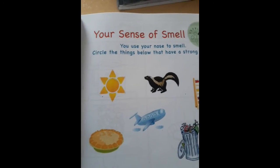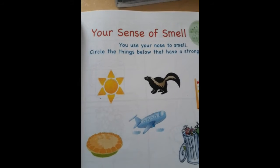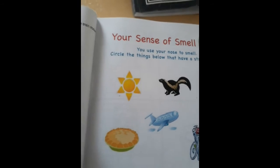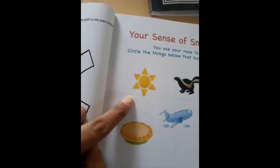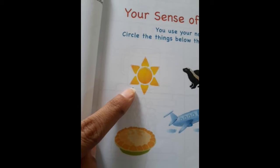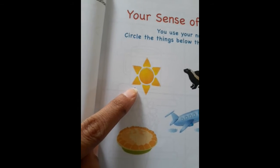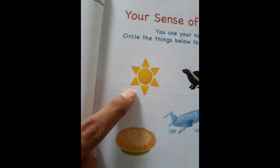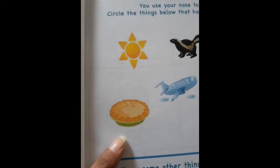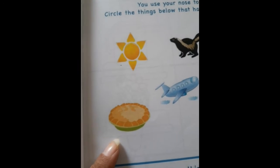Now you need to color the pictures of things you can smell. Suppose there is a sun — you just smell the sun? No, we see the sun. And what is this? This is a pancake. You can smell a pancake? Yes.